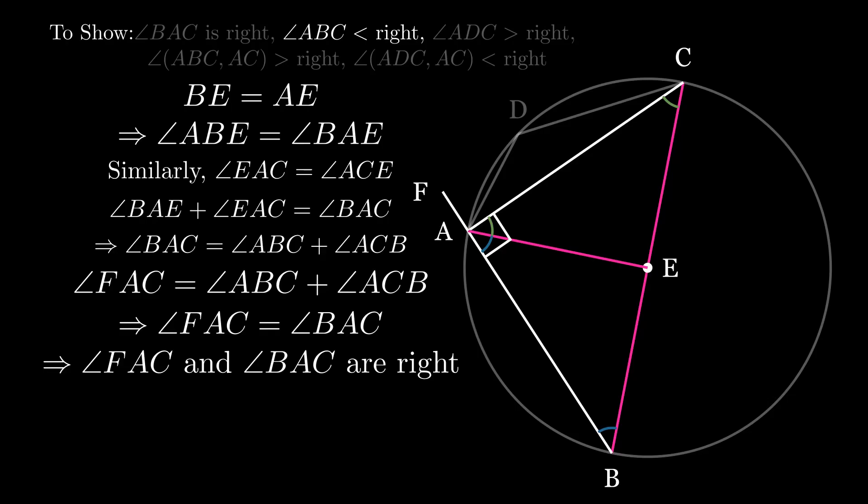Since a triangle's angles add up to two right angles, this means automatically that angle ABC is less than a right angle. Angle ABC being the angle with a non-diameter base built in the larger segment.